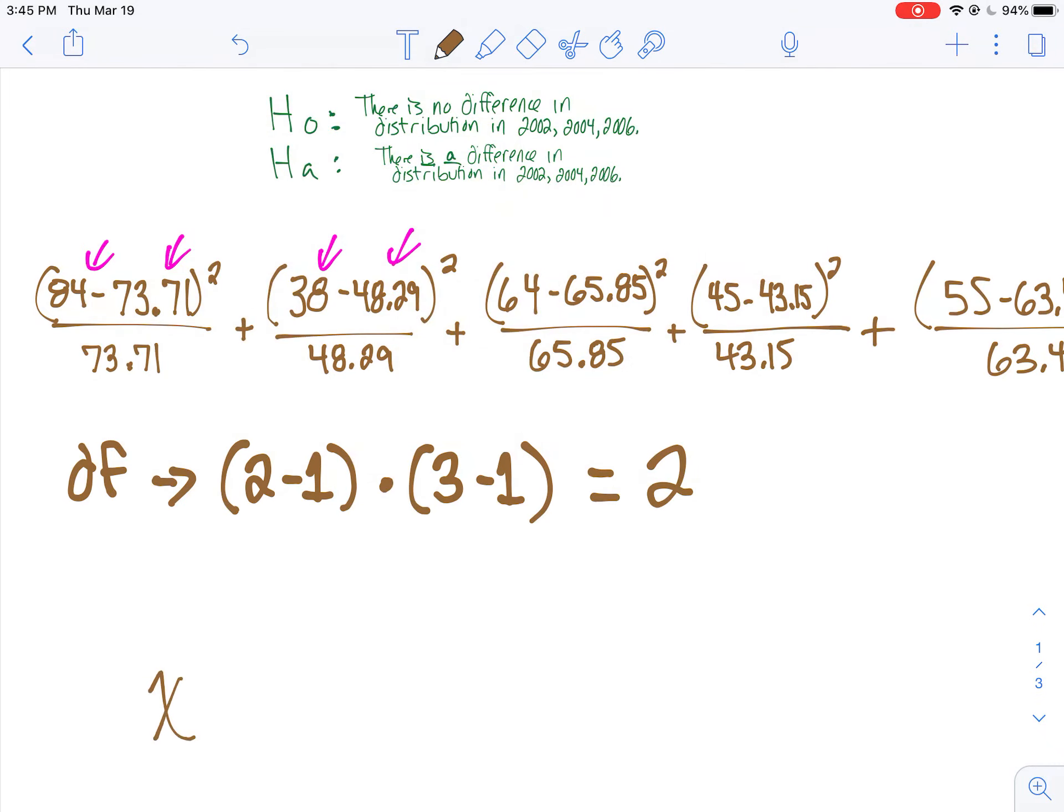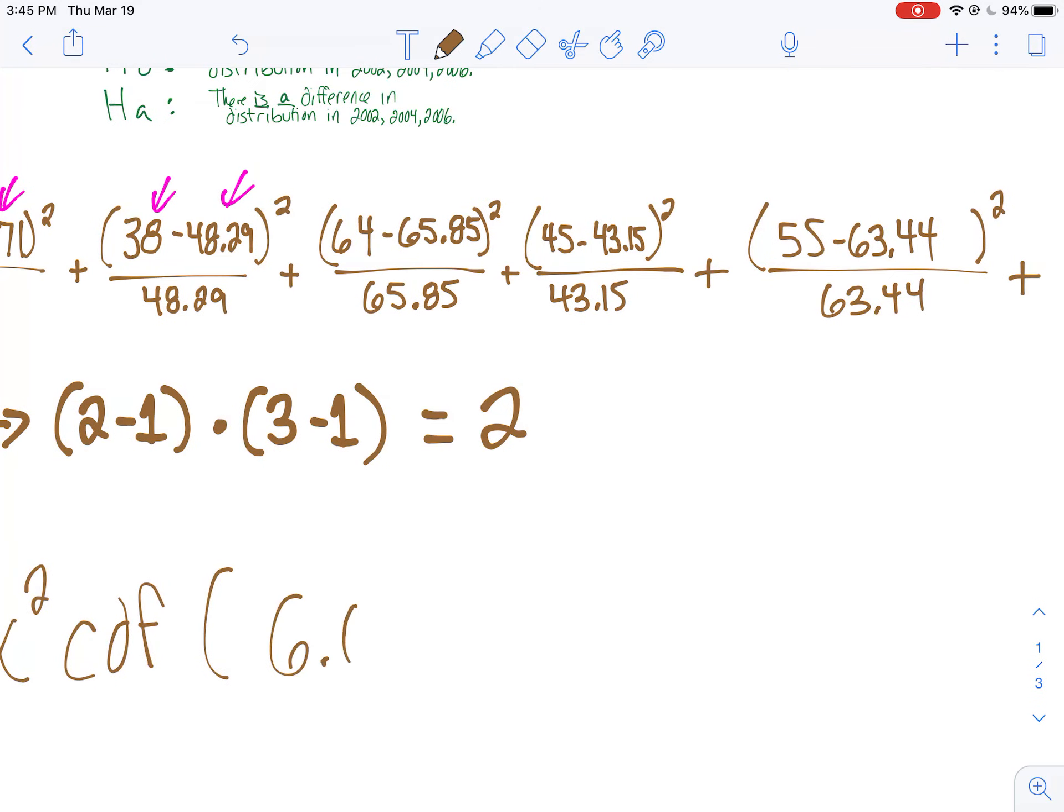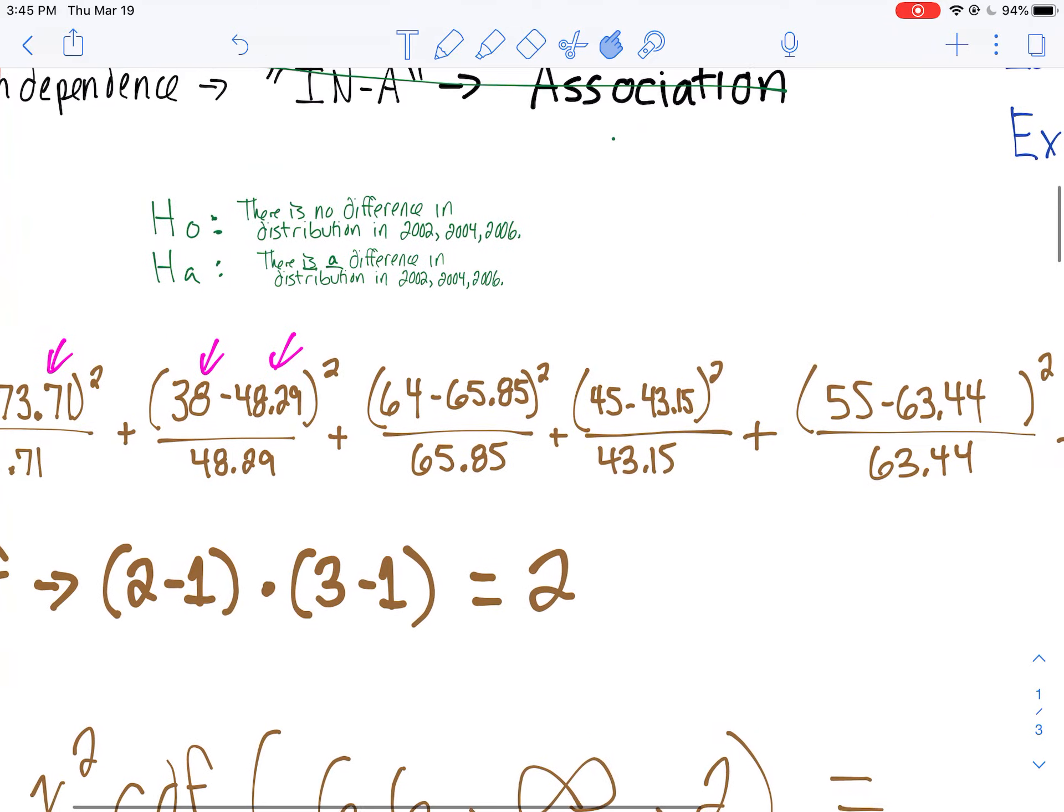Now, I could use chi-square CDF, that's a function on your calculator. You enter in your chi-square statistic, which was 6.6, which would be your lower. We're trying to find the probability of getting that difference or higher. So then your upper would be like upper infinity, or a bunch of nines, like I like to enter.